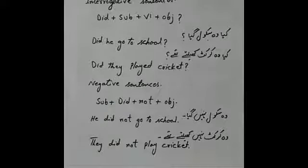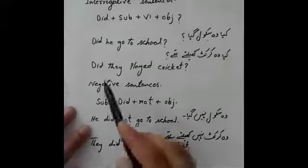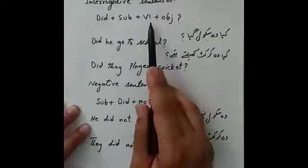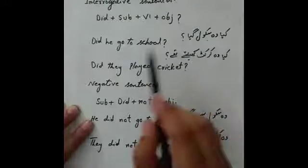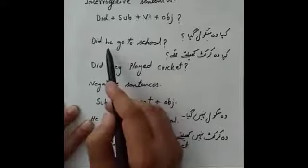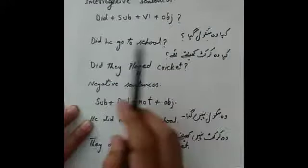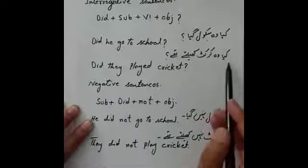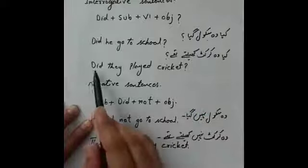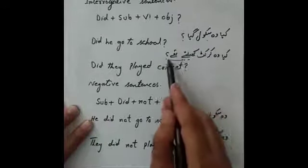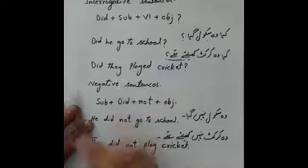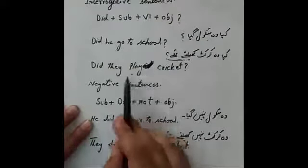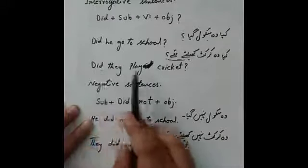جیسے آپ نے present indefinite میں پڑھا تھا کہ جب does یوز کریں تو verb کے ساتھ s/es نہیں لگاتے، اسی طرح جب did یوز کیا تو second form of verb نہیں بلکہ first form آئے گی۔ مثال: کیا وہ سکول گیا؟ → Did he go to school? کیا وہ cricket کھیلتے تھے؟ وہ plural ہے تو: Did they play cricket?